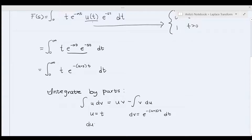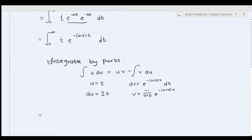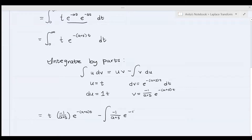So all we have to do is plug it into the definition. u is equal to t, so t times v, which is negative 1 over a plus s times e to the negative a plus s times t, minus the integral of v, which is negative 1 over a plus s times e to the negative a plus s times t, times du, which is dt.